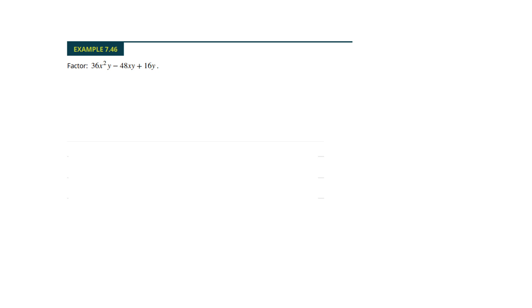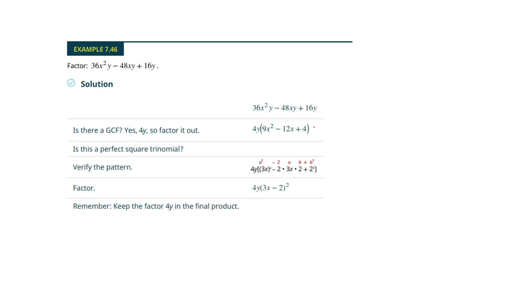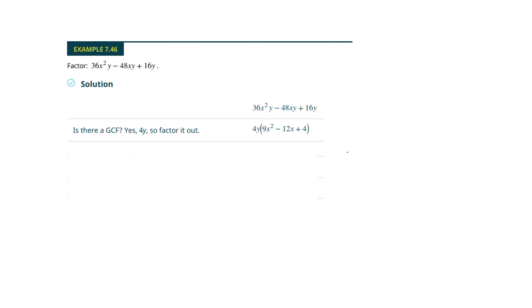I'm looking for square roots here on the front and the back. But wait — I've got a GCF first, so always pull out a GCF. I can pull out the 4y, which then turns this into something nice. I then check for square roots on the front and back and I've got them: 3x. I'm going to write my two square roots down. I've got a middle term and it's a minus, so both get minuses. Double-check myself: negative 6x and negative 6x. Don't forget to bring down the GCF.